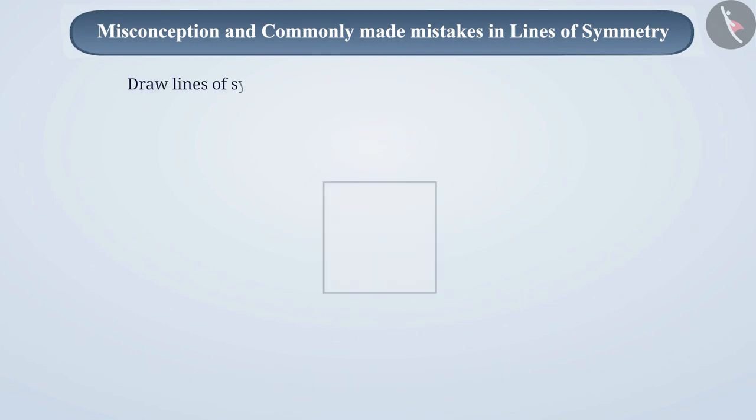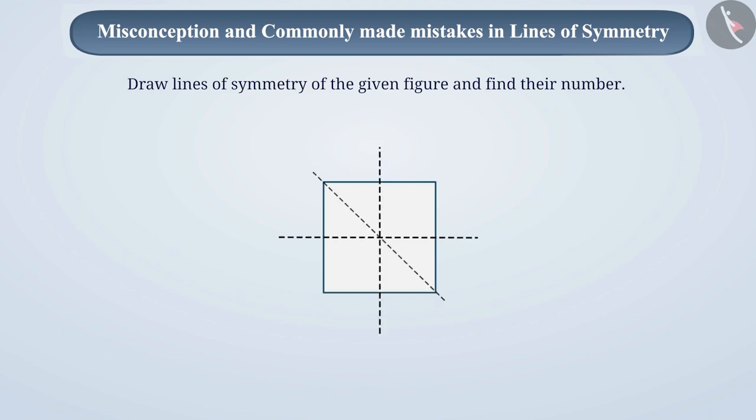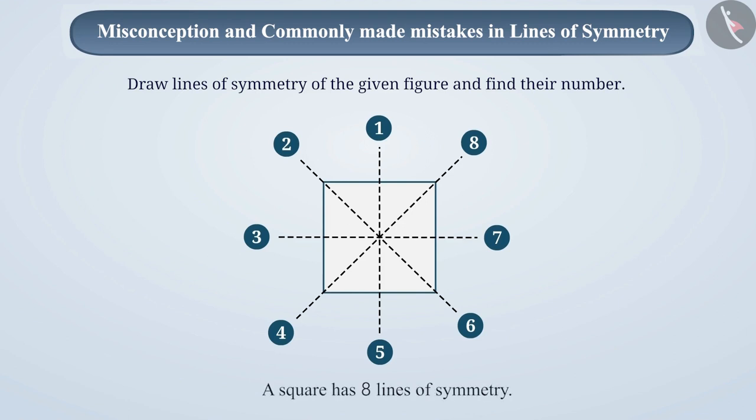If students are asked to draw lines of symmetry and find the numbers of such lines, some students draw the correct lines of symmetry. But when they count them, they make a mistake by counting a line twice, and hence the answer is wrong. Like they say that a square has eight lines of symmetry, and they don't realize that they are counting a line twice.